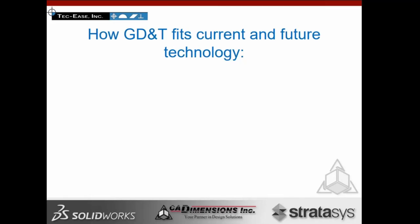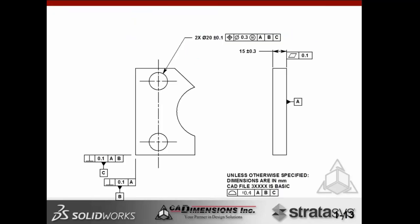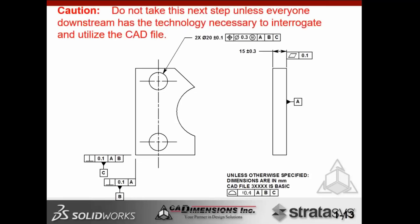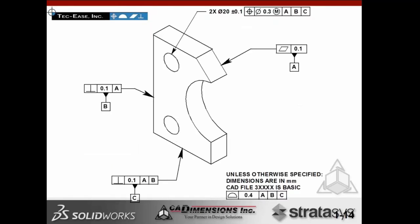How does GD&T fit into current and future technology? We can utilize this note that makes the CAD file basic. We don't want to take this next step unless everybody downstream has the technology necessary to interrogate and utilize the CAD file. This refers to the Y14.41 Digital Modeling Practices standard, where we actually attach dimensions and GD&T directly to the CAD file — parametrically attached. The note in the lower right-hand corner reads: unless otherwise specified, dimensions are in millimeters; CAD file number is basic; profile of 0.4 with respect to datum A primary, B secondary, C tertiary.